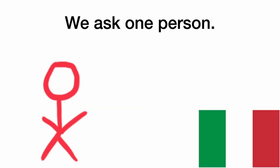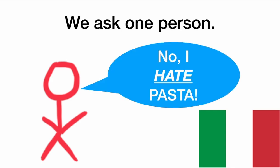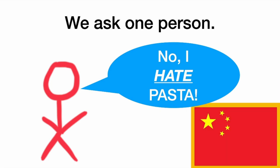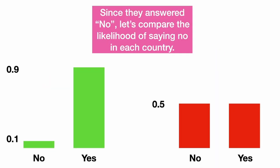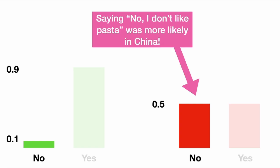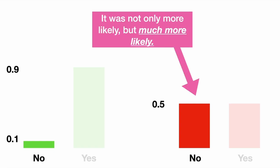So we ask one person, and we tentatively believe we are in Italy, but this person says no, I hate pasta, and that makes us doubt that we are in Italy and now believe that we are in China. Since they answered no, let's compare the likelihood of saying no in each country. Saying no, I don't like pasta, was more likely in China — not only more likely, but much more likely.